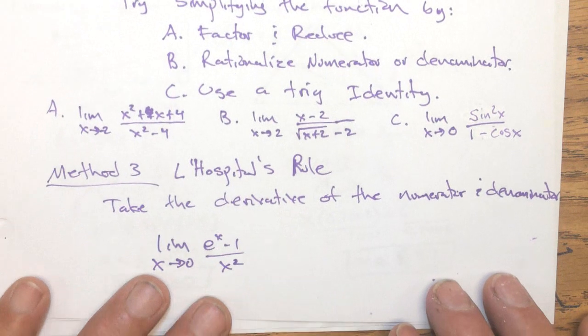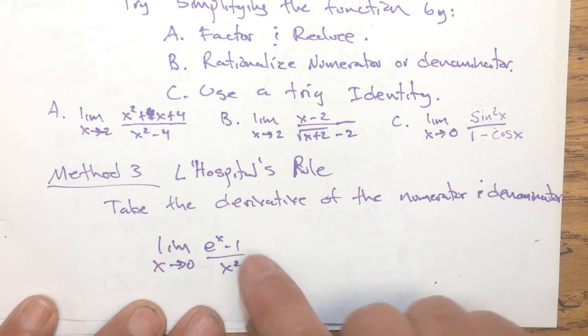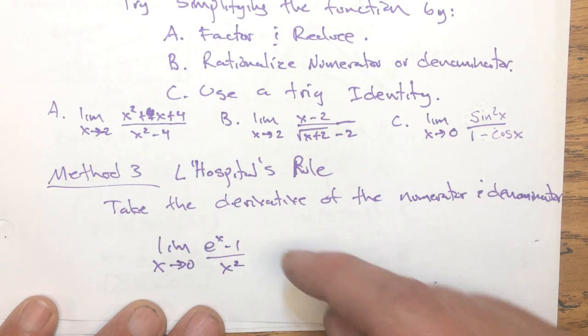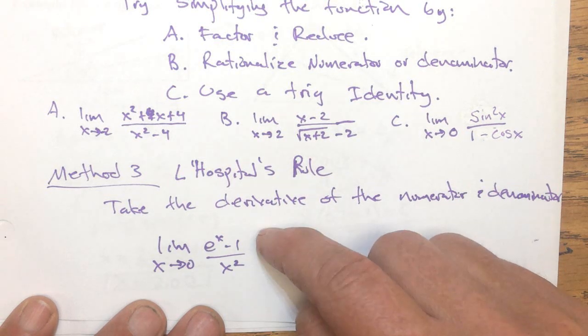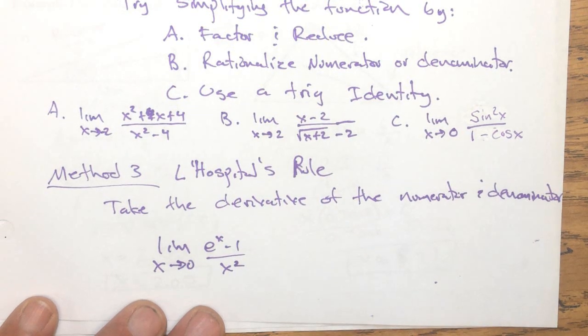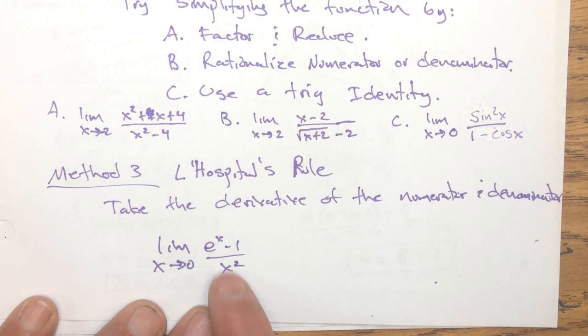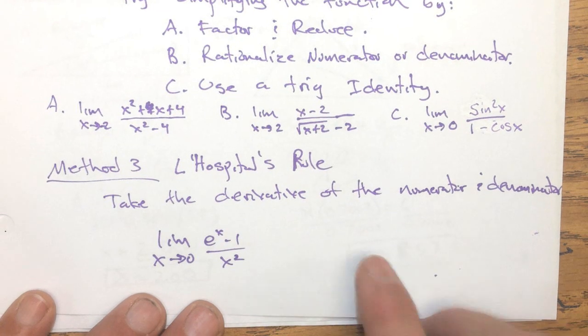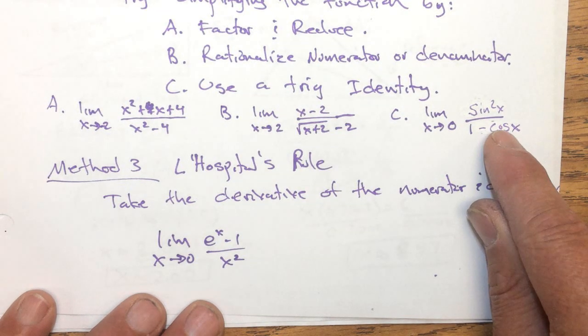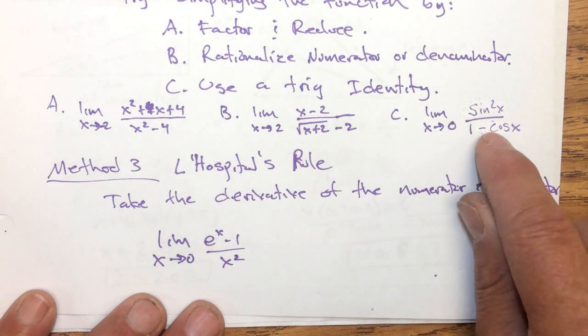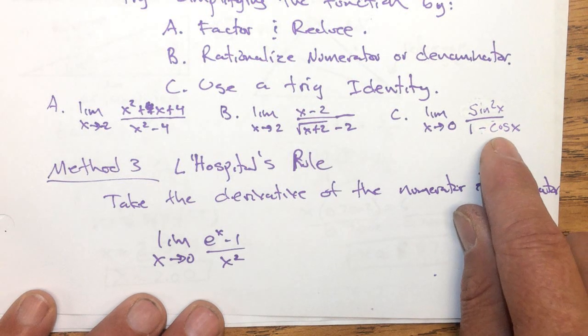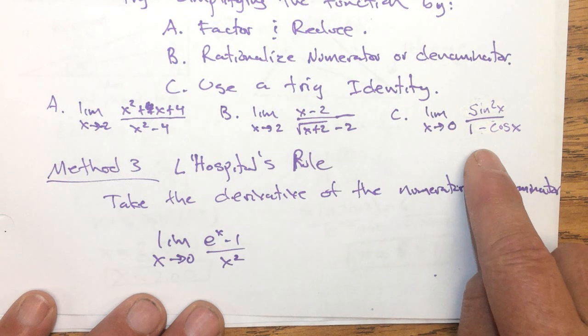Method three is L'Hopital's rule. And to use L'Hopital's rule, we just take the derivative of the numerator and denominator and reevaluate the function. As simple as that. And that would probably work for this one, too.